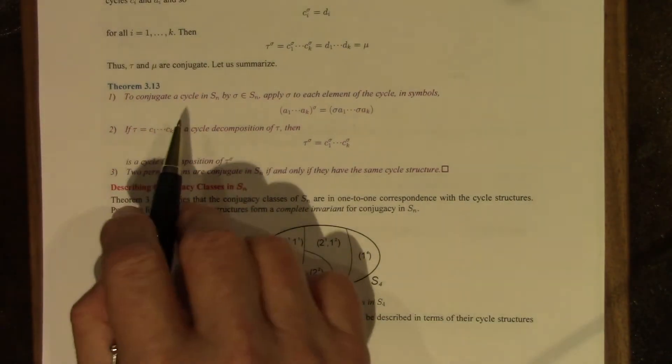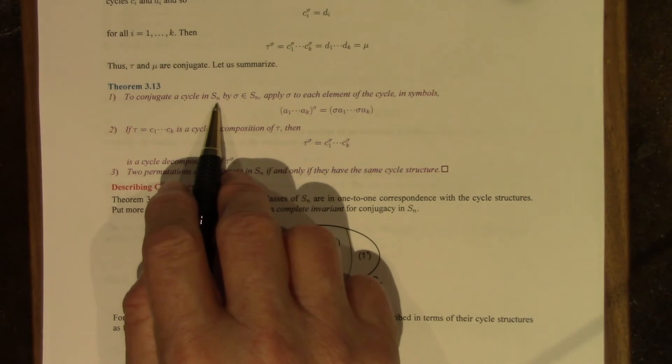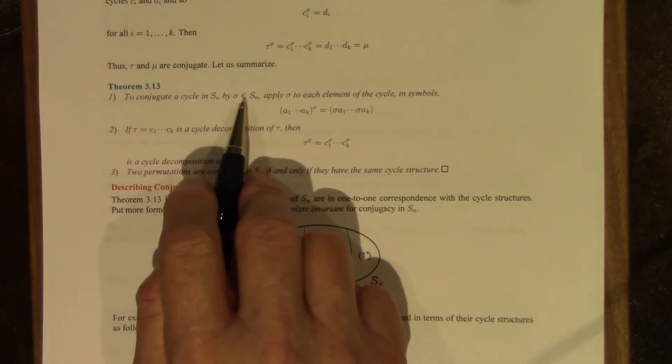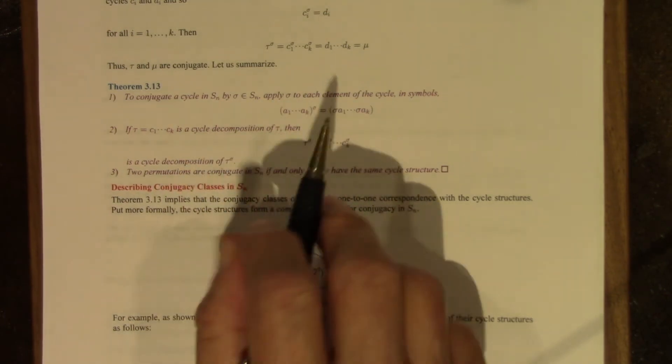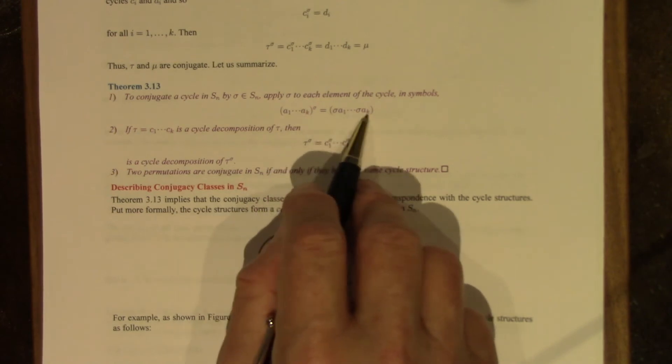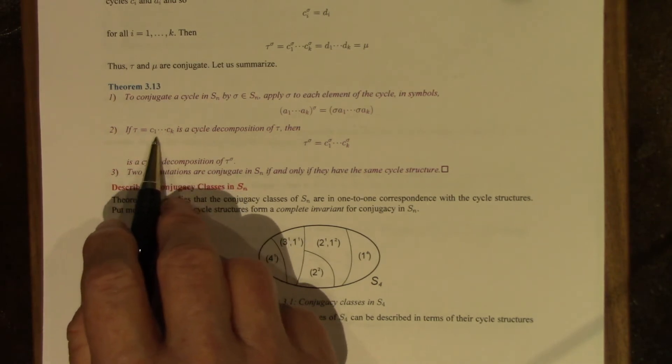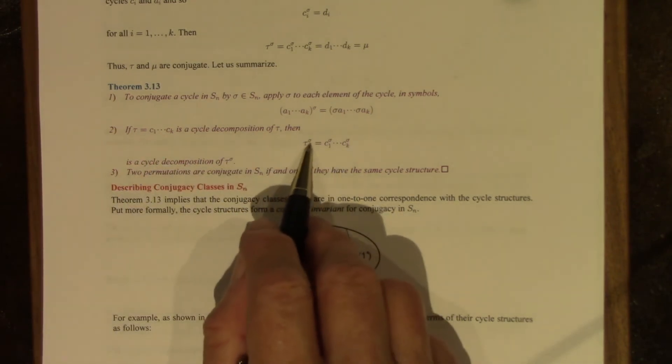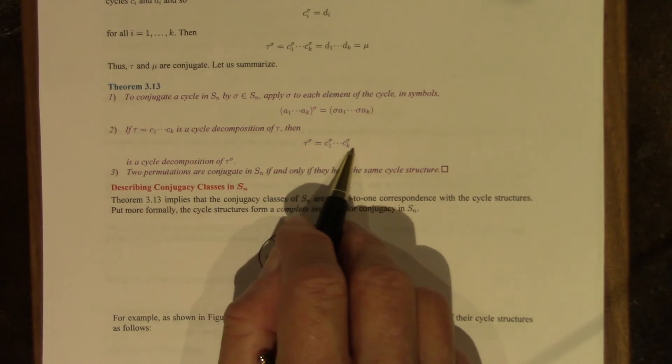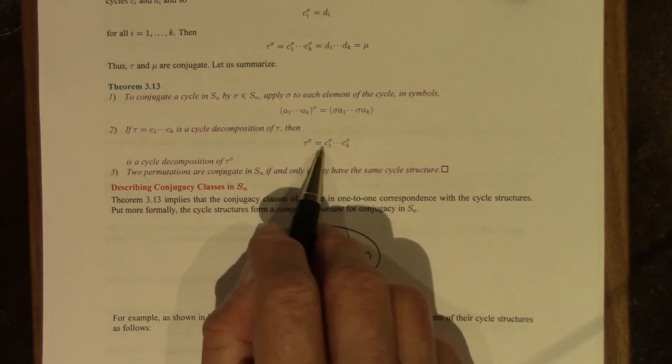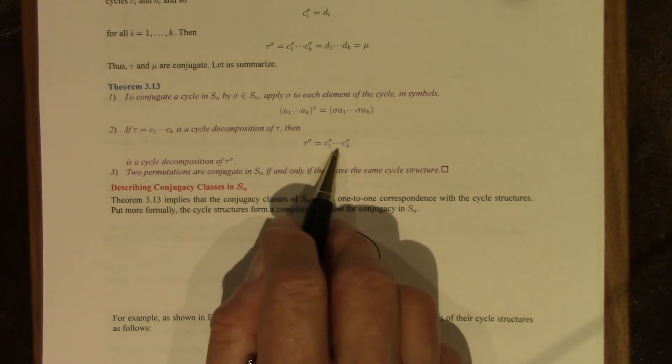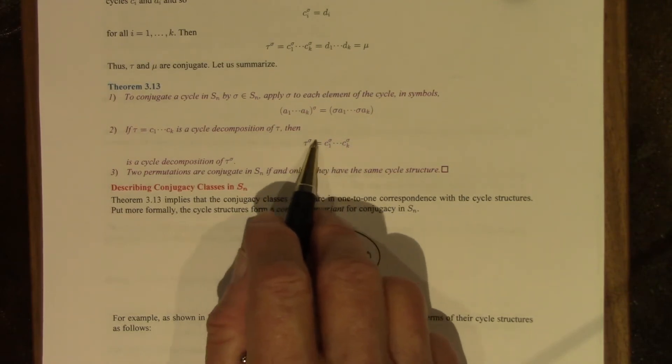So the summary is that to conjugate a cycle in Sn by sigma, we just apply sigma to each element of the cycle. If Tau has this cycle decomposition, then its conjugate by sigma is the product of the conjugates of the cycles, and this is the cycle decomposition of Tau sigma.